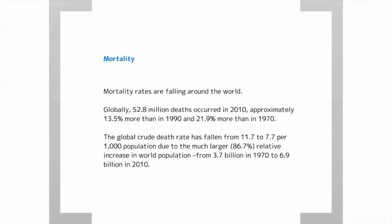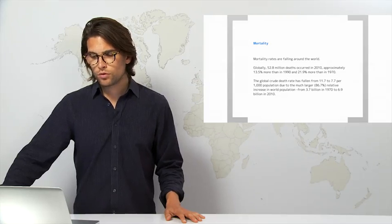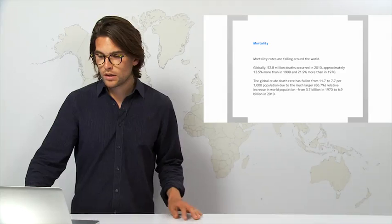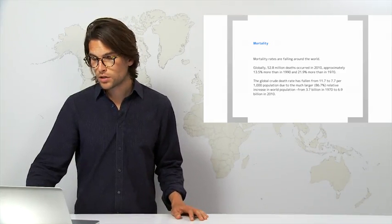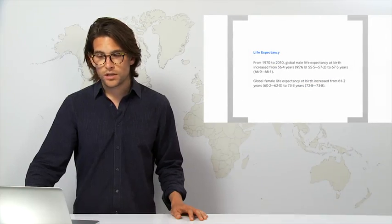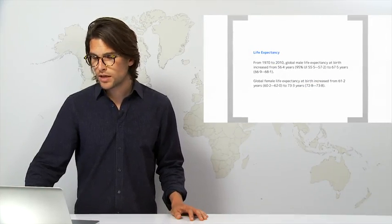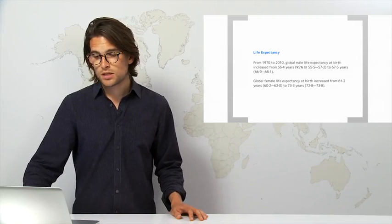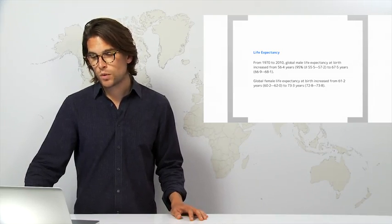So in terms of mortality, we found that mortality rates are falling pretty much across the board around the world. Globally 52.8 million deaths occurred in 2010, approximately 13% more than 1990 and 20% more than 1970. The global crude death rates have fallen from 11% to 7% per 1,000 population, due to the much larger relative increase in the world's population from 3.7 billion in 1970 to 6.9 billion in 2010. We've seen an increase in life expectancy from 1970 to 2010. Global male life expectancy at birth increased from 56.4 years to 67.5 years, and females from 61 to 73 years.